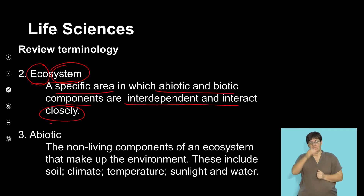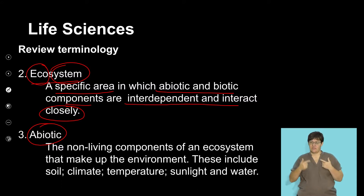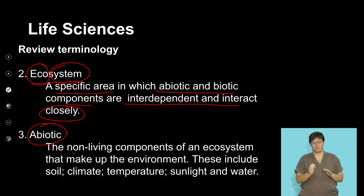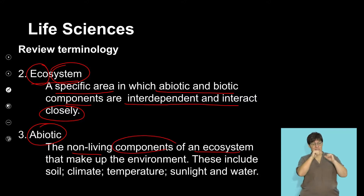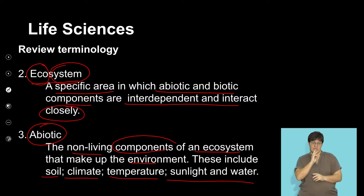The concept of abiotic: biotic refers to living organisms, so abiotic refers to the organisms or parts of an environment that are non-living. These are the non-living components of an ecosystem that make up the environment. This would include the soil, the climate, temperature, sunlight, and water. We will unpack that in detail in a bit.